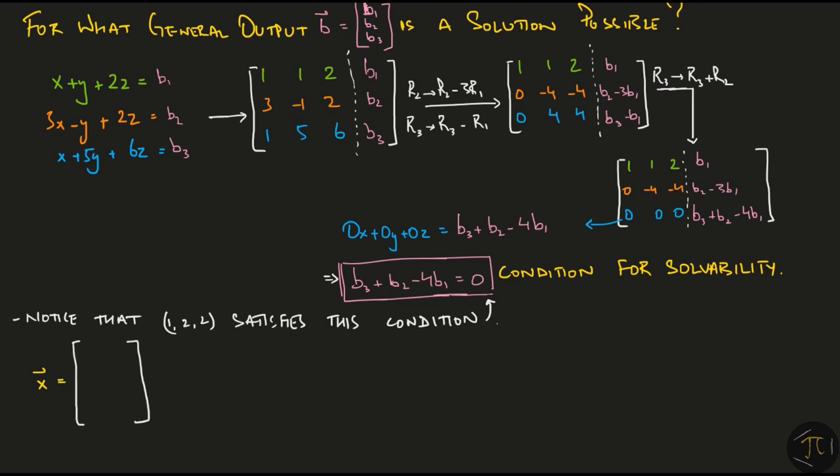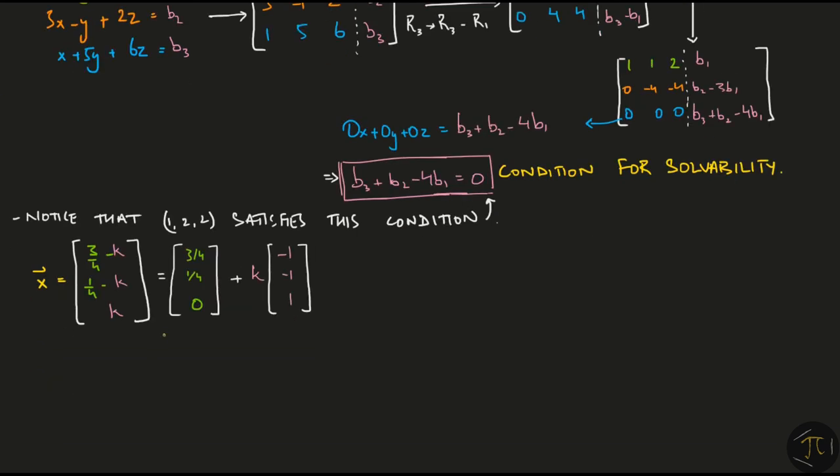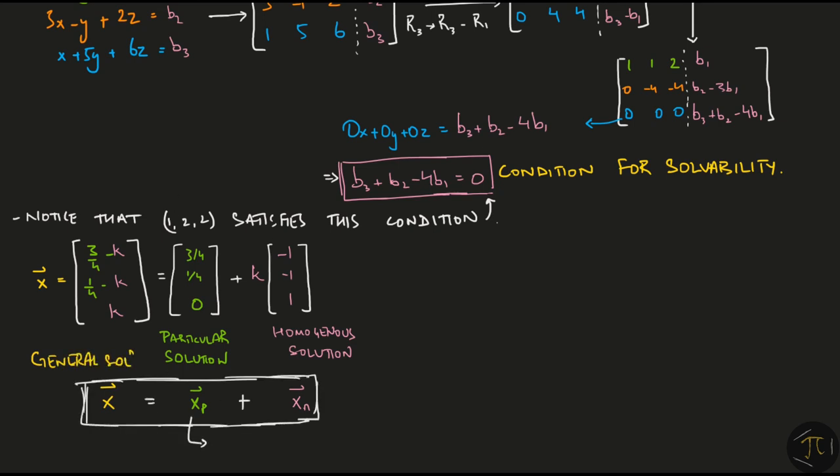Anyhow, we have earlier found that for 1, 2, 2, the general solution was this vector. Now, I am going to split this into two separate vectors. The first one contains only numbers and the second one is a multiple of k. The first one is called the particular solution to the problem, represented by the vector xp. And if you remember, a long time ago when this video started, we had already solved for this next term, the homogeneous solution. So, the general solution is just the sum of a particular solution and all the homogeneous solutions. To quickly find one particular solution, put all the free variables equal to 0 in the echelon form.